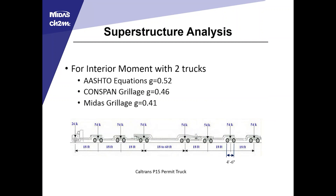One example shows the interior moment with two trucks: AASHTO equations, ConSpan grillage, and the MIDAS grillage were all within the same range, but MIDAS was slightly less conservative and allowed for a working design. Because of the span length and the agency permit truck, the P15 was the design truck that controlled for Strength 2.